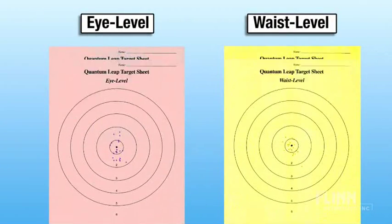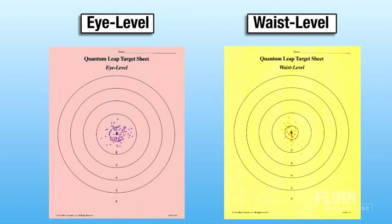The marble drop is repeated 100 times at each height. The picture that gradually emerges is approximations of the 1s and 2s orbitals.